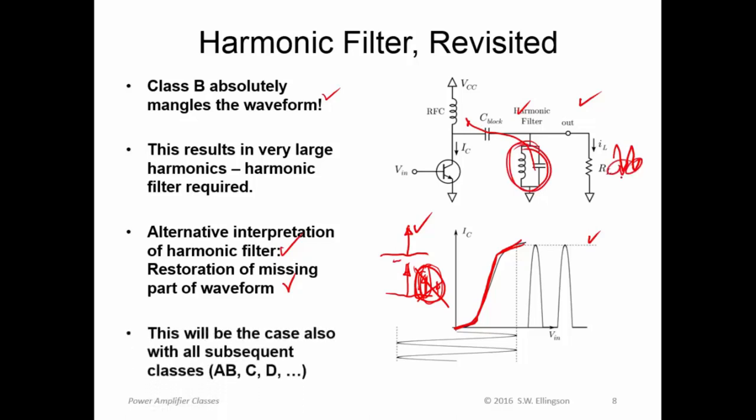So what we'll have in the output is once again a full sinusoid. By the way, yet another way of thinking about this is that the harmonic filter is storing energy here and releasing it when there is no current conducting through the transistor. And I should note here that this will be the case with all subsequent classes that we investigate, certainly class AB, but class C, class D. We will also implement this scheme where we allow ourselves to mangle the waveform by preventing the transistor from conducting some fraction of the time, thereby improving the efficiency, and then we'll restore the waveform to some extent doing this kind of processing, harmonic filtering.